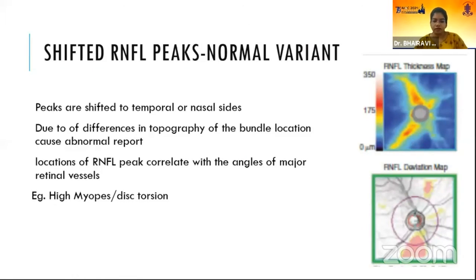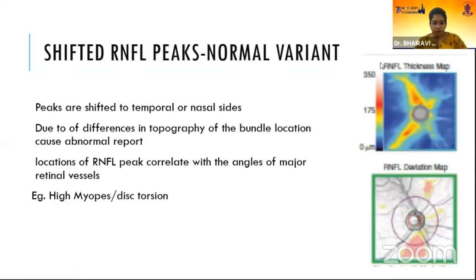In the shifted RNFL peaks, peaks are shifted to the temporal or nasal side due to differences in the topography of the bundle location, which can show an abnormal report. The location of the RNFL peak correlates with the angle of the major retinal vessels. This is most commonly seen in higher myopes and with distortion.